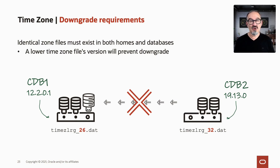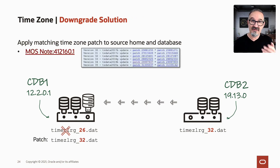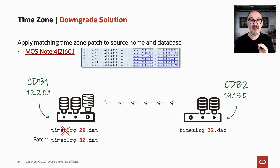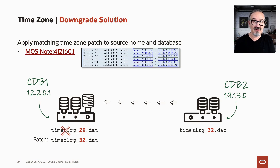What do we do normally in this case? When we realize this, it's not too late — you don't have to start from the beginning. But you need to patch your source home. It needs to get the same time zone patch your target is already on. In this case, that would be time zone 32.